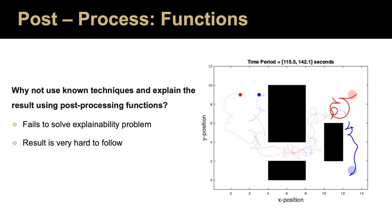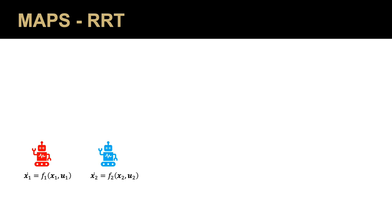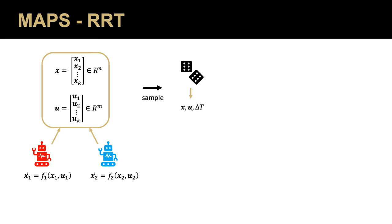So consider a multi-agent system each with continuous possibly non-linear dynamics. First, we compose the state and input spaces together, creating a centralized system. Next, we initialize Maps RRT, a sample of state, an input, and some tiny delta t. After that, we use those sampled variables to propagate the system from some near state to some new state.